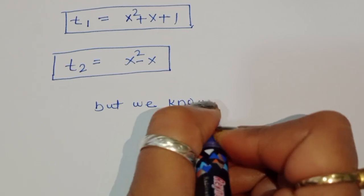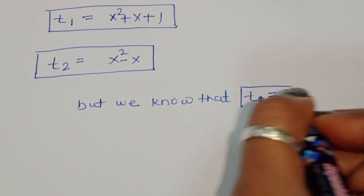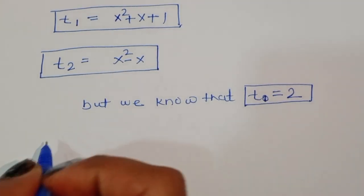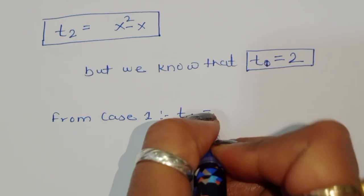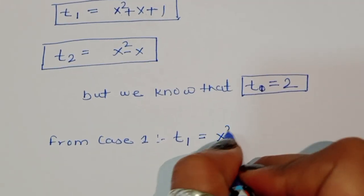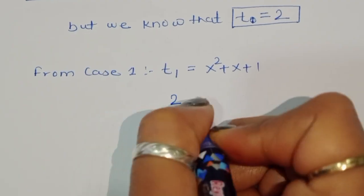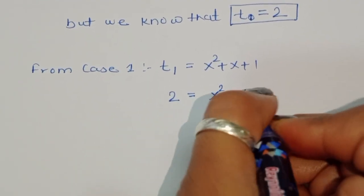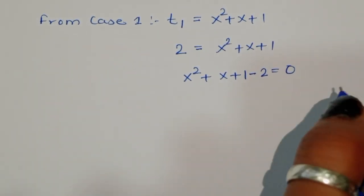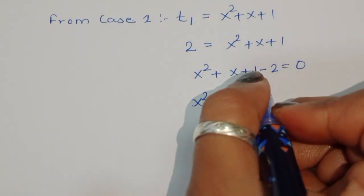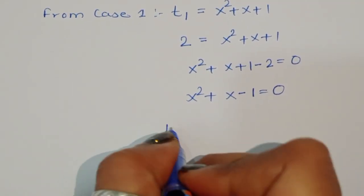Since we set t equal to 2, from Case 1 with t1: x squared plus x plus 1 equals 2, so x squared plus x minus 1 equals 0. Using the discriminant: d equals b squared minus 4ac, with a equals 1, b equals 1, c equals minus 1.